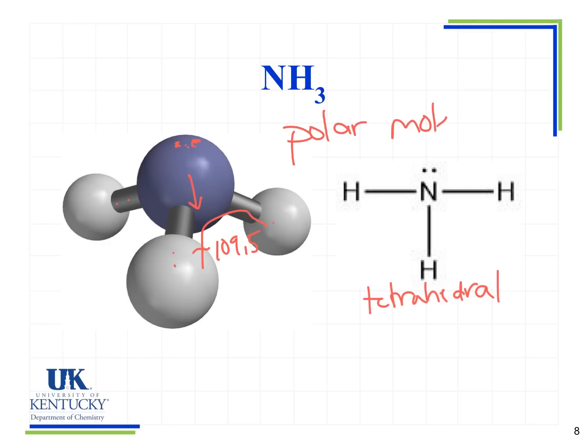In general — not always, but most of the time — if we have a lone pair of electrons on a molecule that has linear, trigonal planar, or tetrahedral geometry, we are always going to see that it is a polar molecule.